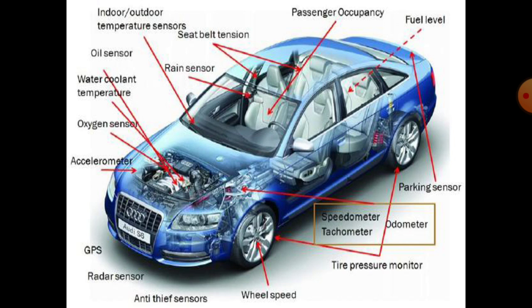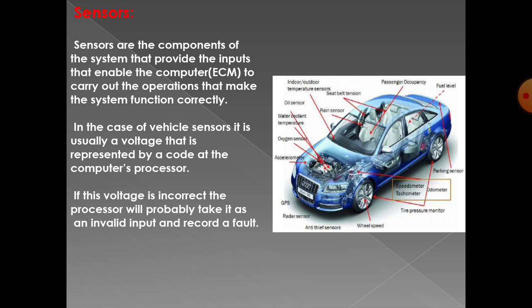In this picture, there are different types of sensors used in your vehicle: indoor/outdoor temperature sensor, seat belt tension sensor, rain sensor, water coolant temperature sensor, oxygen sensor, accelerometer sensor, GPS radar sensor, anti-theft sensor, wheel speed sensor, tire pressure monitor, speedometer, tachometer, odometer, parking sensor, fuel level, and passenger occupancy sensor. There are also different types of sensors used in the engine: TPS, MAP, and EGR — meaning throttle position sensor, manifold pressure sensor, and exhaust gas recirculation sensor.